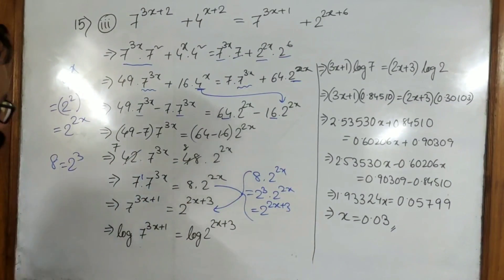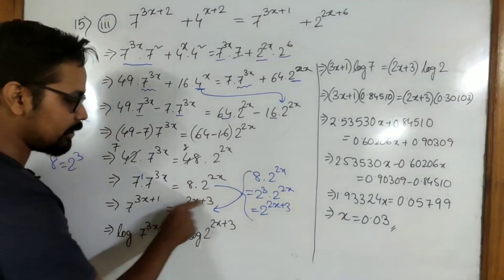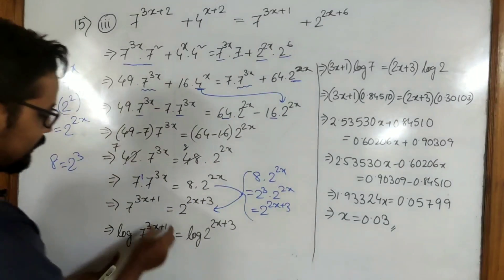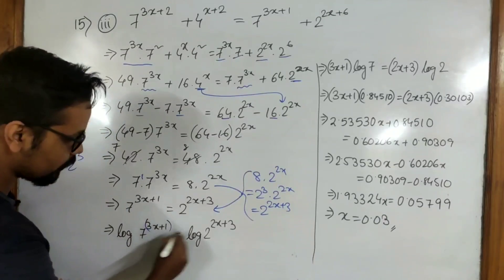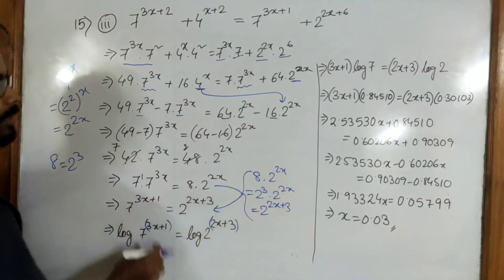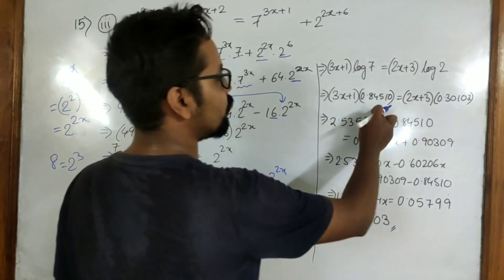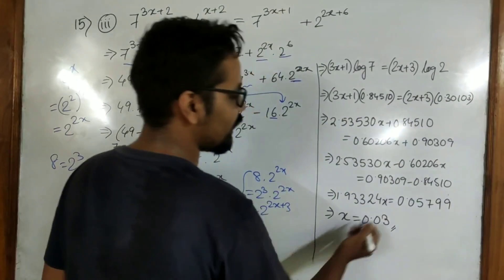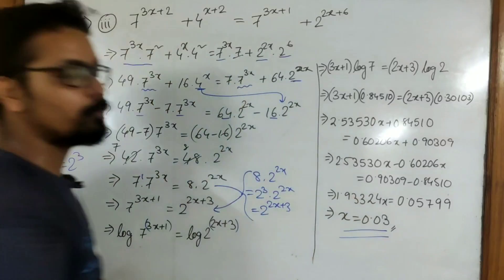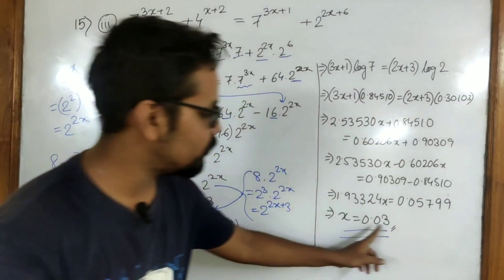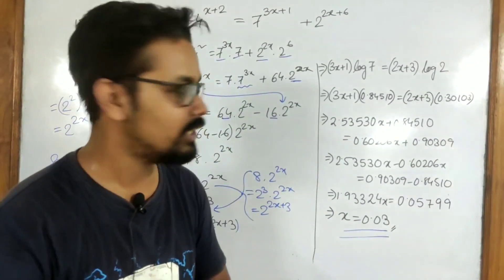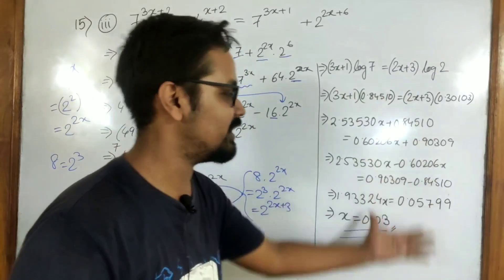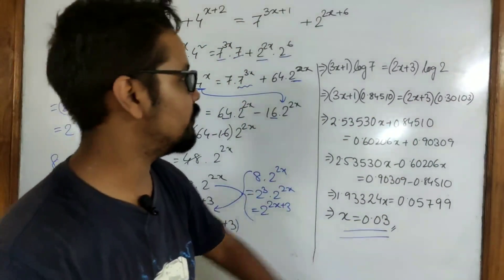Now we have a single number with a power on each side, so we can take the log. We take log on both sides and the powers come to the front. Then we get the value of log 7, put the value of log 2, simplify the whole thing, and solve like a normal linear equation to get the value x equal to 0.03. Linear equation solving is known to you, so I am not emphasizing much on this.